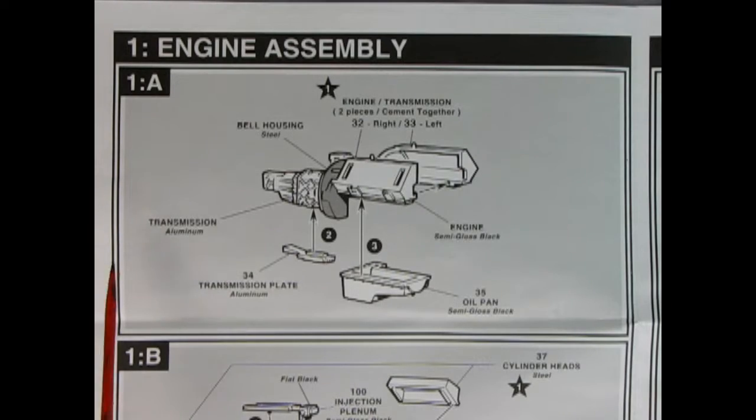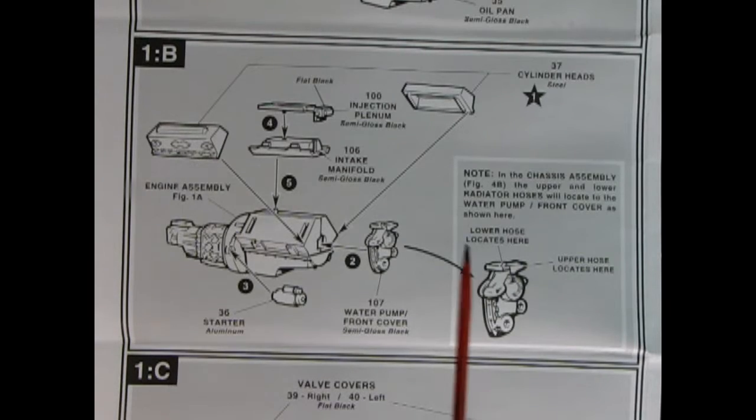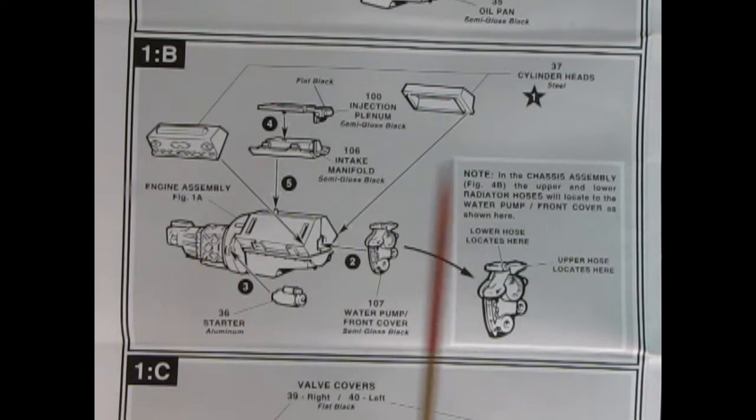Here we're showing step one and this is our engine assembly. We've got our right and left hand side engine block being glued together, the transmission plate which glues underneath and our oil pan. Now a lot of people are saying that they really appreciate me showing all these different instructions because sometimes people lose their instructions. So we here at Monster Hobbies are always happy to help and show you what you might be missing.